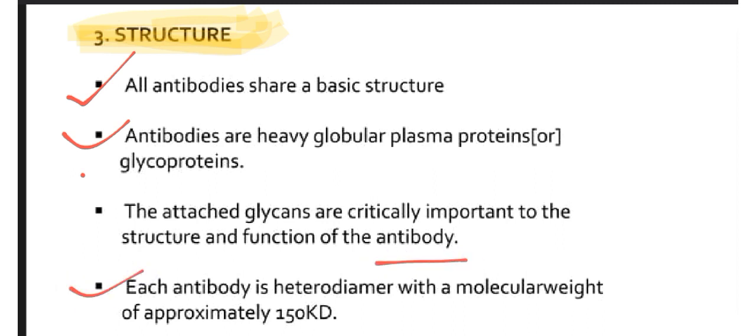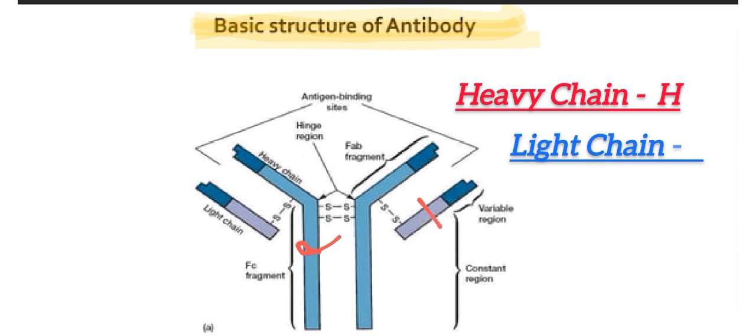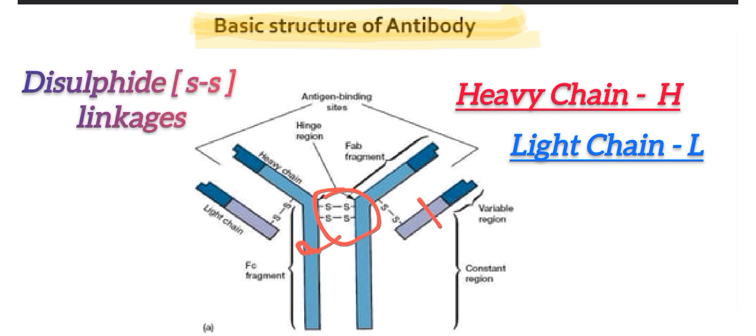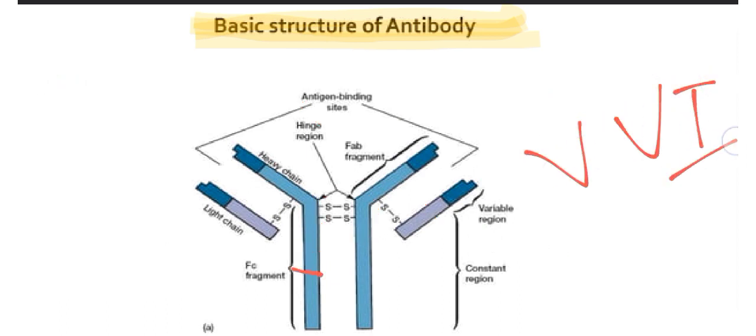This is the basic structure of antibody. This is heavy chain, and this is light chain. H and L chains are bonded via the disulfide linkage. These are the antigen binding sites. This structure is very very important.